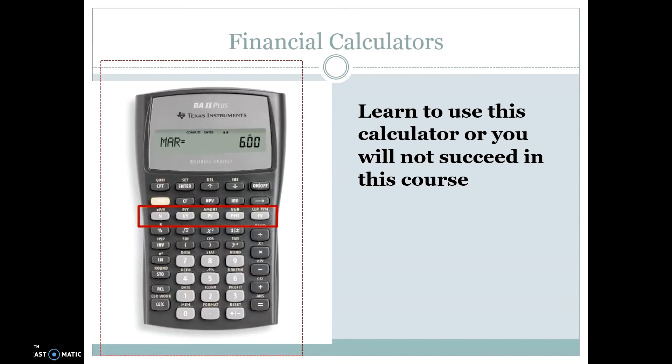There's a guide for the BA2+, and ones for both the TI-84 and the TI-86. They have distinct instructions on how to get to the financial functions, how to use them, button presses, things like that — they're very thorough. Please make use of those if you choose to use a calculator other than the one I'm going to show you how to use in all the example videos.